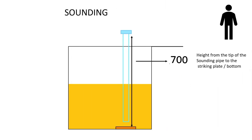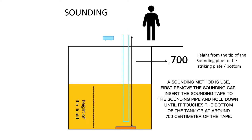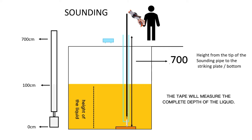Let's proceed. Here we have a tank filled with diesel oil. The height from the tip of sounding pipe to the striking plate is 700 cm. A sounding method is used. First, remove the sounding cap. Insert the sounding tape to the sounding pipe and roll down until it touches the bottom of the tank or at around 700 cm of the tape. The tape will measure the complete depth of the liquid.